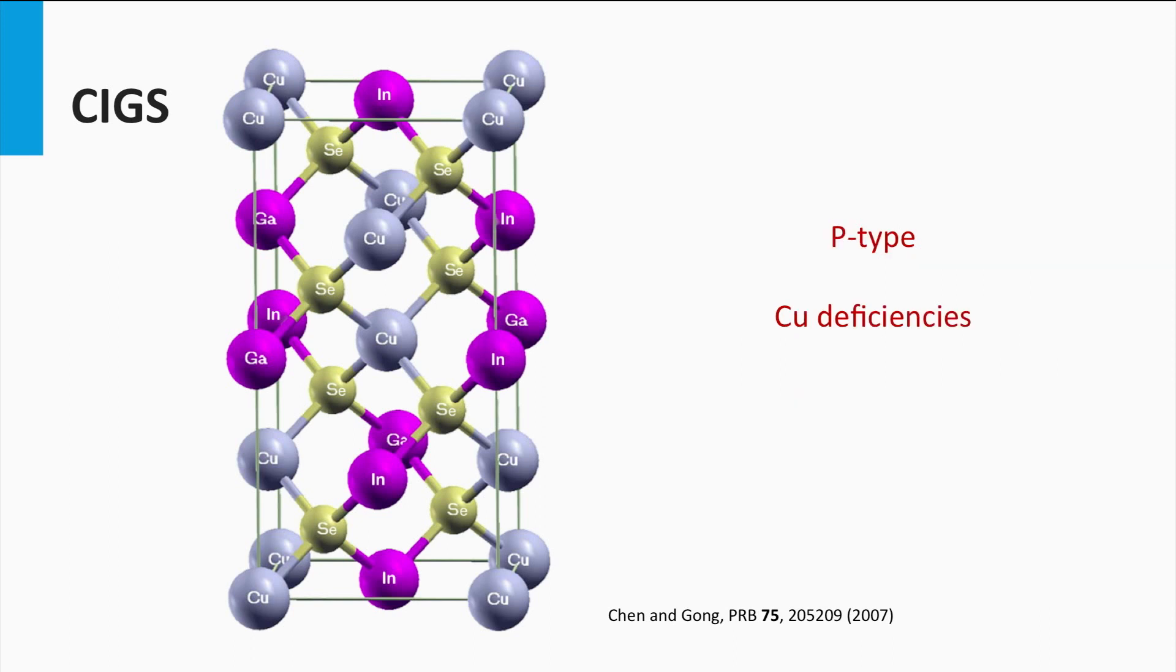The CIGS absorber layer is a p-doped layer. The doping is a result of intrinsic defects in the material related to copper deficiencies. These vacancies act as an acceptor, meaning electrons excited from the valence band can get easily trapped. As a result, the holes become the majority charge carrier density.